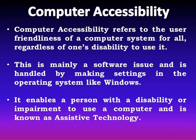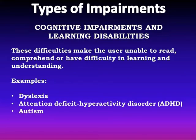Before moving ahead to understand how these accessibility options are set, let us first understand the various types of impairments or disabilities that are dealt with by these options. The first one is cognitive impairment, also called a learning disability. We have heard of terms like dyslexia, ADHD (attention deficit hyperactivity disorder), and autism. These are difficulties which make a person unable to read, comprehend a situation, or have difficulty in learning or understanding a particular thing.